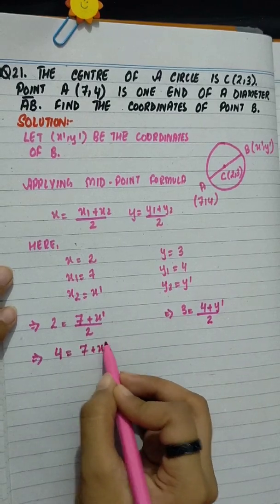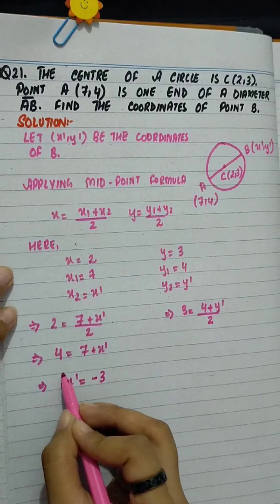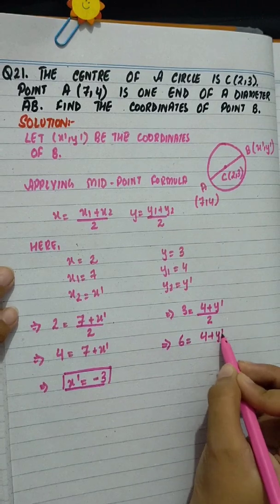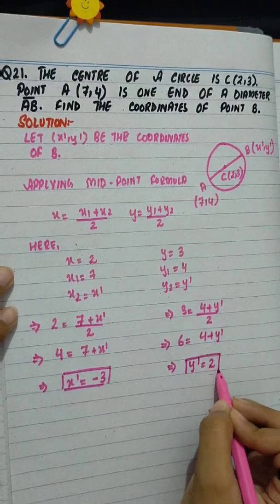Here 4 equals 7 plus x' and x' value is minus 3. 6 equals 4 plus y' and y' equals 2.